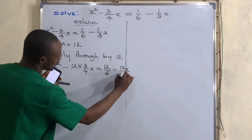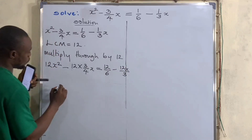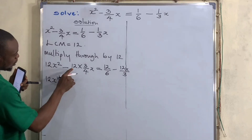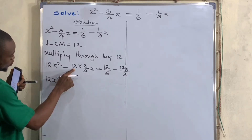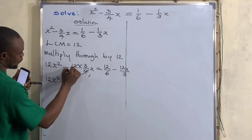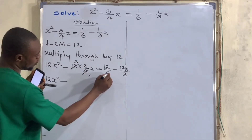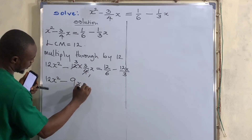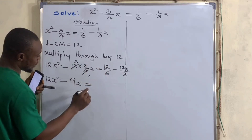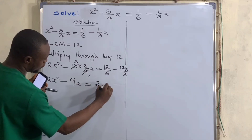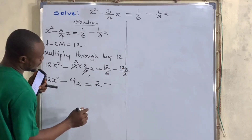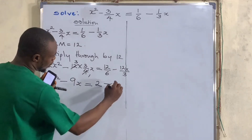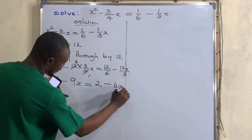So this simplifies to 12x squared. Now 4 can go into 12 three times, so 12 times 3 over 4x gives us 9x. On the right side, 12 divided by 6 gives us 2, and 12 divided by 3 gives us 4, so we have minus 4x.